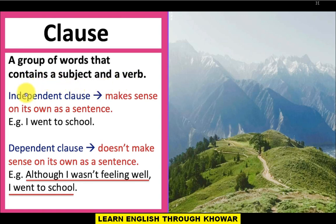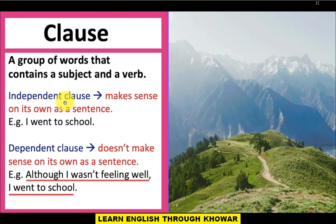Aur classes an ju main types spasun buyan: independent class aur dependent class. Independent class spasun buyan — independent class makes sense on its own as a sentence. Or independent class kya huyan: i mukamal mafhum spasun doyan, i mukamal sentence spasun buyan. Example: independent class share — 'I went to school.' Kya huyan independent class share, aur hya i mukamal sentence spasun share, i mukamal mafhum spasun doyan.